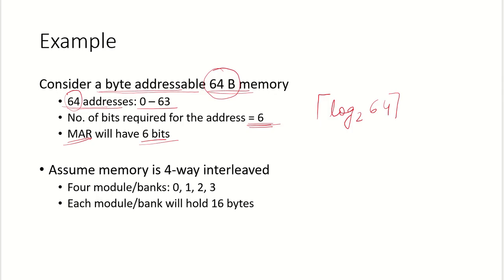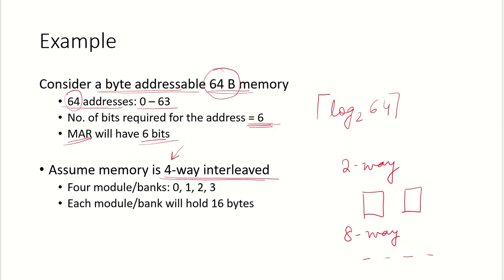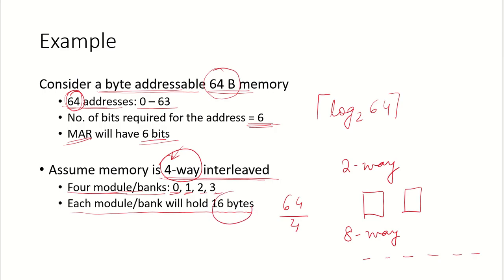We assume the memory is 4-way interleaved, meaning there will be 4 modules. If it were 2-way interleaved we would have 2 modules; 8-way interleaved gives 8 modules. So we organize the main memory as 4 modules or banks — module 0, 1, 2, and 3. With 64 addresses and 4 modules, each module or bank will hold 64 ÷ 4 = 16 bytes.